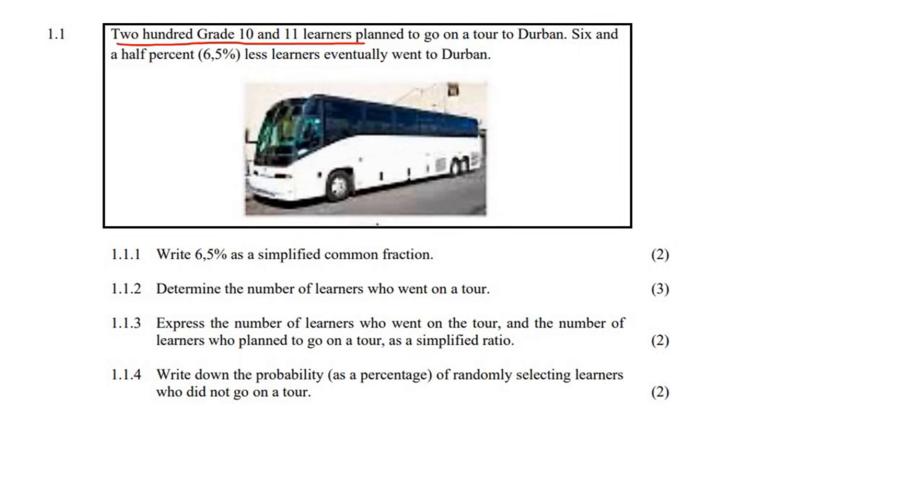Planned to go on a tour to Durban. Six and a half percent less learners eventually went to Durban. What does that even mean? Well, there were 200 learners originally, but that's how many learners were supposed to go. They are the ones who planned, but maybe something happened. Maybe some of them had to go away, or maybe some of them could not afford to go on this trip. There could have been various things that happened, but six and a half percent could not make it. So it says six and a half percent less learners.